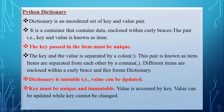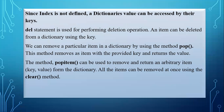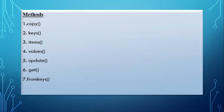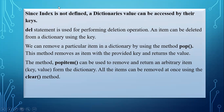The dictionary is mutable — value can be updated, but key must be unique and immutable. Value is accessed by key. Value can be updated while key cannot be changed. Indexing is not defined in dictionary, so the value can be accessed by their keys. The DEL statement can be used for deletion. The pop method deletes a single item by specifying the key, pop item deletes a random value, and clear method clears all items from the dictionary.